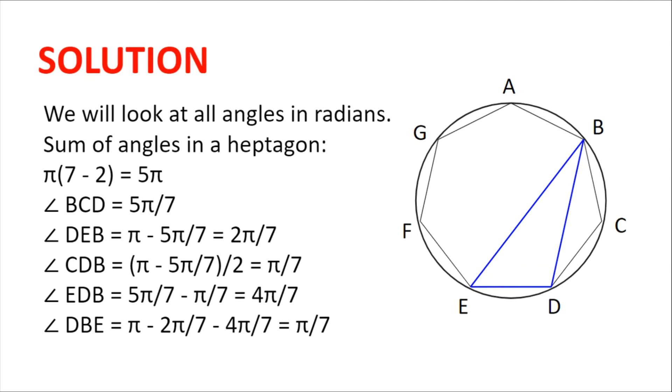And so is angle CDE. Now consider BCDE. The side length BC equals the side length DE, and angle BCD equals angle CDE. So BCDE is a trapezium, which means CD is parallel to BE. This means angle CDE plus angle DEB equals π. So angle DEB = π - 5π/7 = 2π/7.